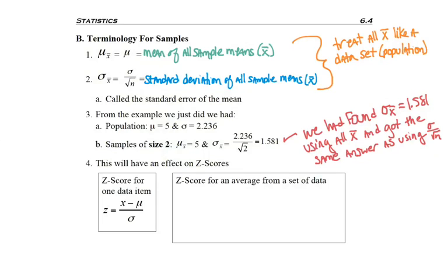You're familiar already with the Z score from one data item. If you just have one data item, which is what we've done, we take X minus mu divided by sigma. So our individual score minus the mean over the standard deviation.